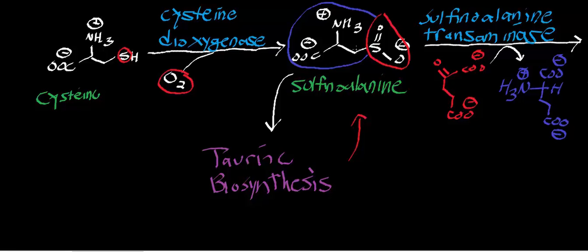But what happens when cysteine levels fall in the blood? Well, those levels are sensed, and what ends up happening is to prevent dangerously low levels of cysteine through catabolism. This enzyme, cysteine dioxygenase, is ubiquitinated.